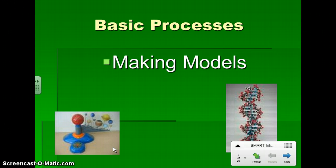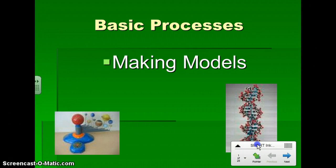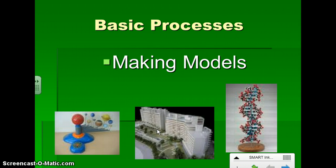The next basic process is making models. We make models of things that are either too large or too small to be seen in the classroom. I can't bring the solar system into the classroom for us. First of all, it would be very dangerous with all kinds of gravity and heat and noxious gases. It just wouldn't fit. So we have models of the solar system. Same thing with DNA. We have DNA, but it's very hard to see it. So we have a model of DNA over here hidden behind this smart ink. And then models are used all of the time in real life to demonstrate different things, like a model of a building.